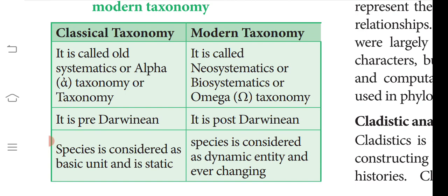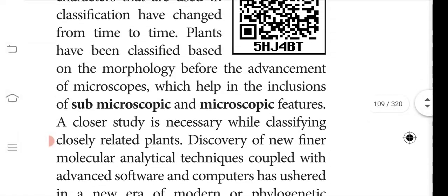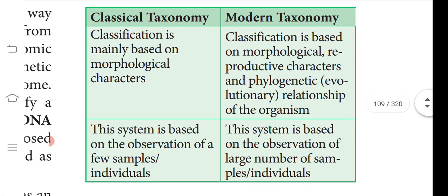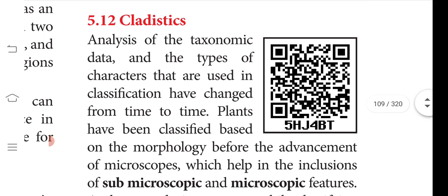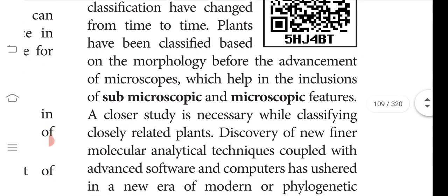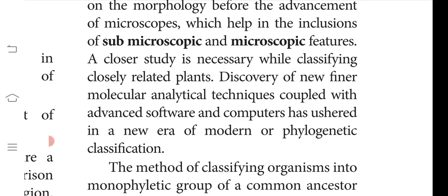Modern or new systematics is also called omega taxonomy. It is post-Darwinian, and species are considered as dynamic, ever-changing entities. Classification is based on morphological and reproductive characters using observations of large numbers of samples. Cladistics involves analysis of taxonomic data, and the types of characters used have changed over time — from morphology to inclusion of sub-microscopic and microscopic features, aided by advanced molecular analytical techniques and computer software.